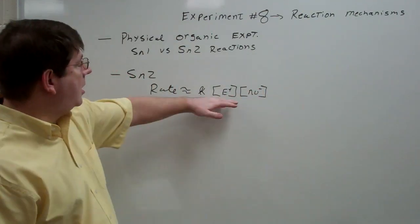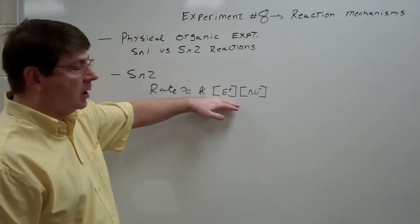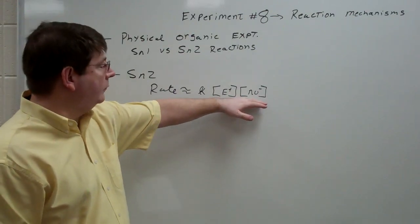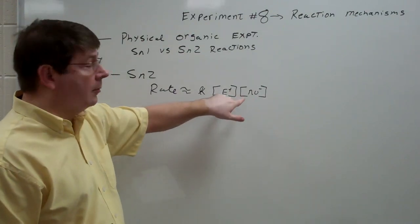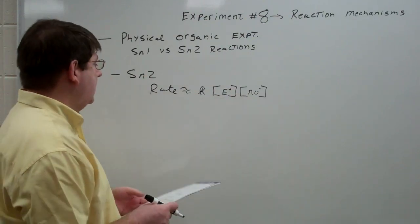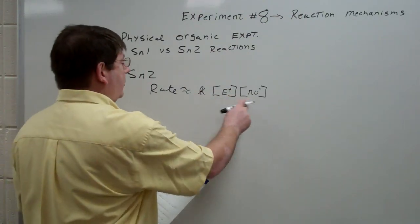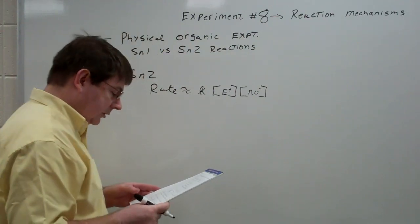And so if we double the amount of electrophile, we're going to double the rate. If we double the amount of nucleophile, we'll double the rate. If we double both, we will quadruple the rate, of course. And so it's dependent on both of these in the rate determining step, the concentration.